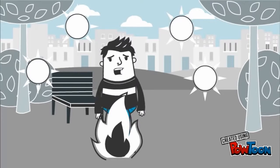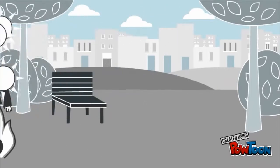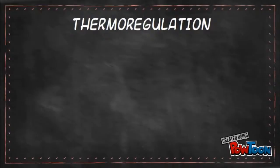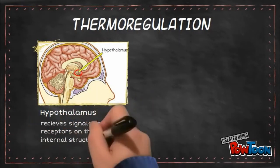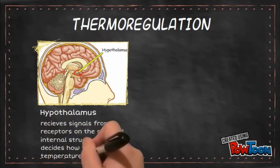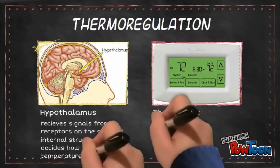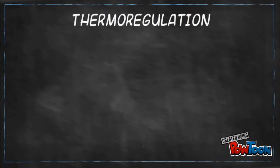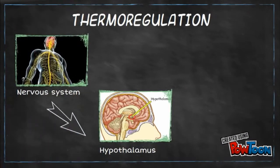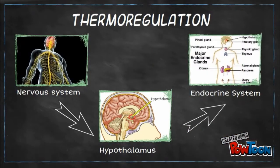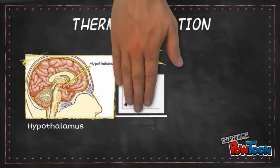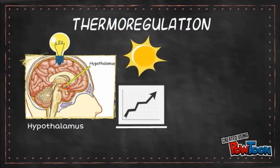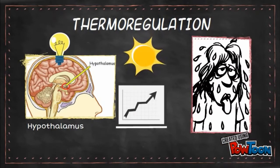A section of our brain known as the hypothalamus helps us detect fluctuations in temperature. It receives signals from receptors on the skin, as well as internal structures, and decides what should be done. This is just like a thermostat in your house, turning on and off the heating or air conditioning. The hypothalamus links the nervous system, where the receptors are, to the endocrine system — a collection of hormone-secreting glands. If the hypothalamus detects an increase in temperature, it would signal certain glands in the body to secrete sweat, which would in turn cause heat loss due to evaporation.